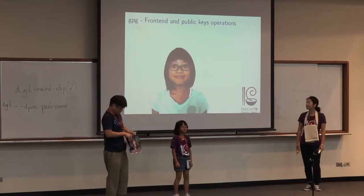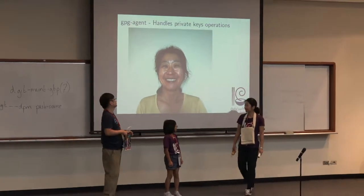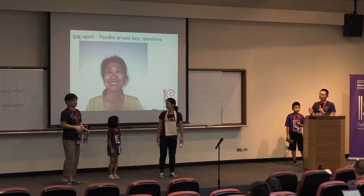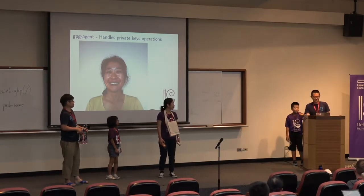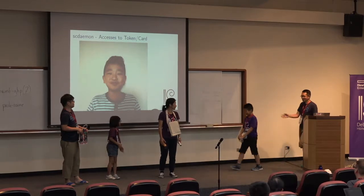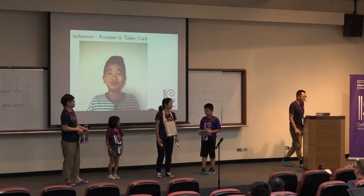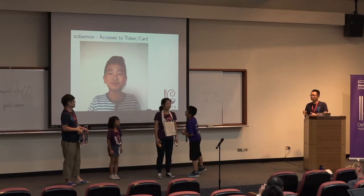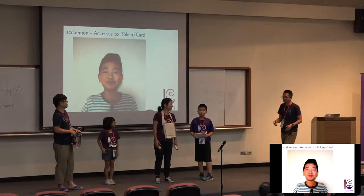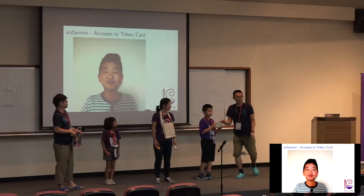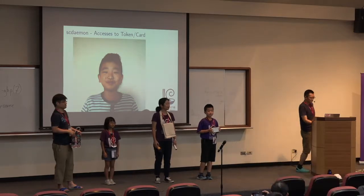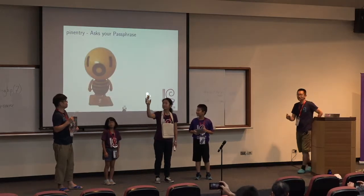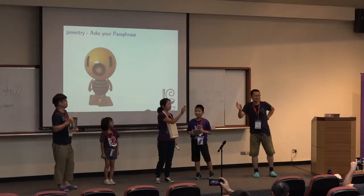The most important thing is the GPG Agent, and she is the mother. Her name is Hitoe. She handles private key operations. And this time, he is very important — he is SC Daemon. SC stands for smart card, and he controls access to the token and smart card. This represents the GNUK token — this metal box. And we have another thing: PinEntry. This baby represents PinEntry.